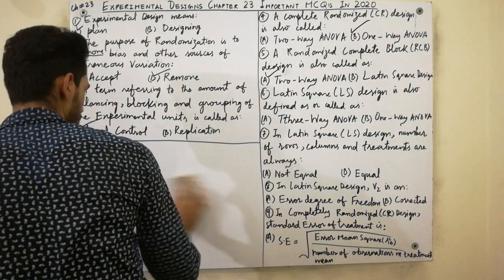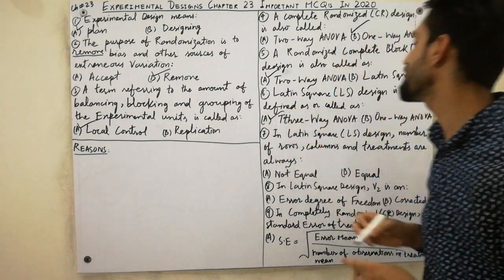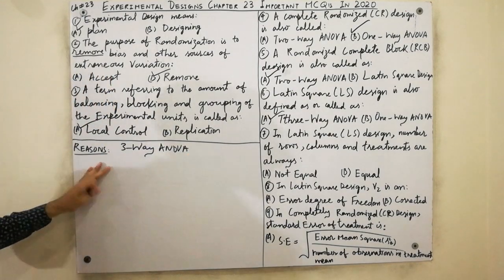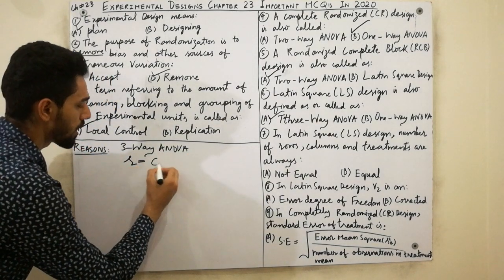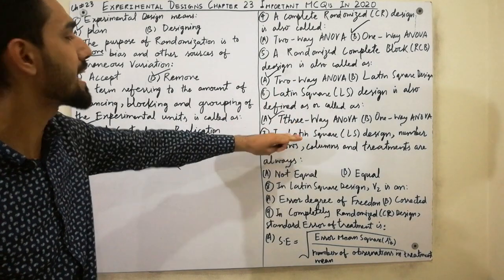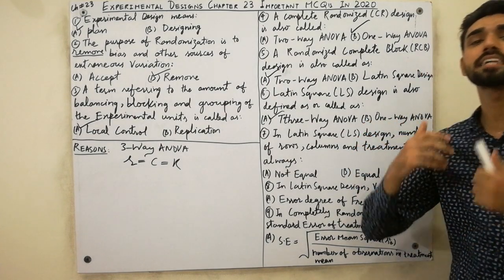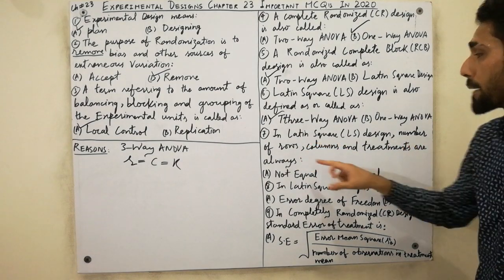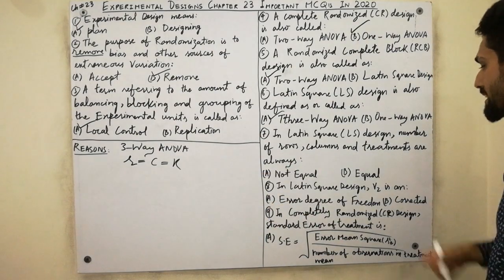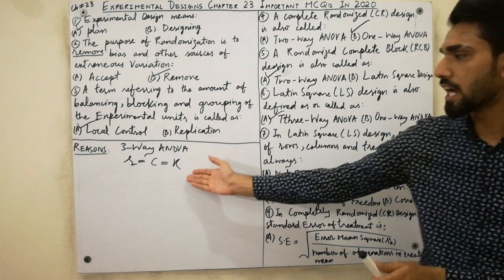Moving to Latin Square Design — very important. Latin Square Design is also called three-way ANOVA. In Latin Square Design, the number of rows, number of columns, and number of treatments are all equal to each other. That is its specialty — it is called three-way ANOVA. Must remember: in Latin Square Design, number of rows, number of columns, and number of treatments are all equal to each other.